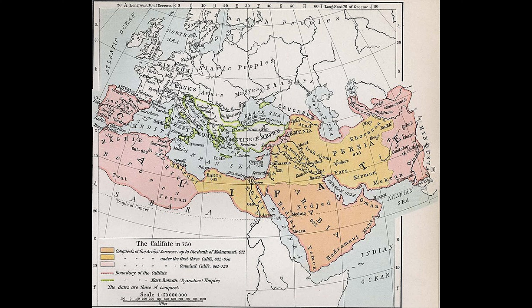The Umayyad Caliphate was a period of great expansion for Islam. The Umayyads, a powerful Arab family, came to power in 661 CE after the death of the fourth caliph, Ali. They quickly expanded the Islamic empire, conquering new lands in North Africa, Spain, and Central Asia, and established a strong central government in Damascus, Syria. The Umayyad Caliphate was a time of great cultural and religious achievement. The Umayyads built mosques, schools, and libraries throughout their empire, patronized the arts and sciences, and encouraged the development of new technologies. The Umayyad Caliphate is considered to be one of the golden ages of Islam.